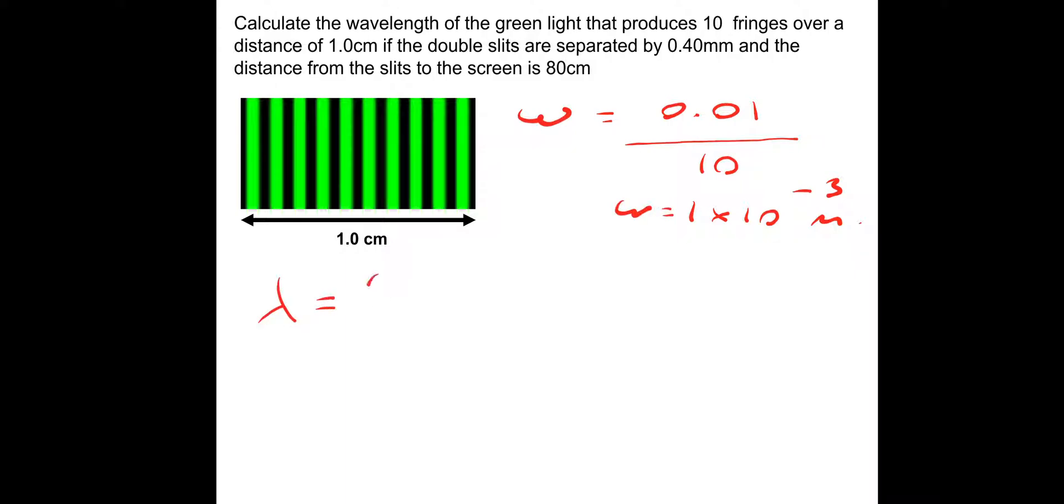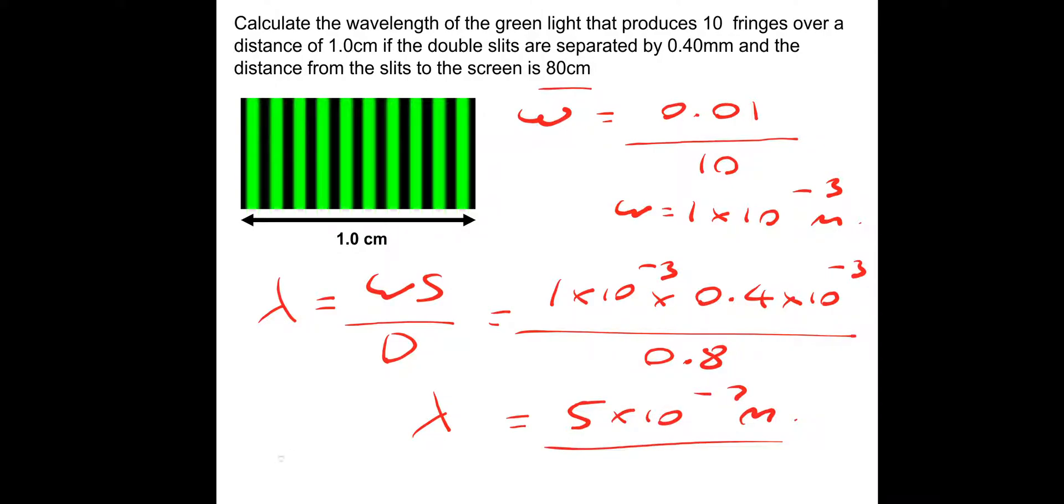Then we have to do λ = WS/D. So W is 1 × 10^-3, multiplied by the slit separation, in this case 0.4 mm, so 0.4 × 10^-3, divided by the distance D to the screen from the slit, which is 80 cm, so 0.8 meters. That gives us a wavelength equal to 5 × 10^-7 meters, which is of course 500 nanometers.